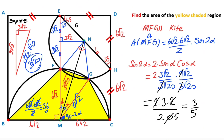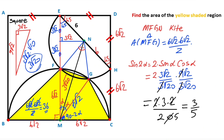Therefore, if you plug this value into the equation, the area of triangle MFG is going to be 108/5 square units.